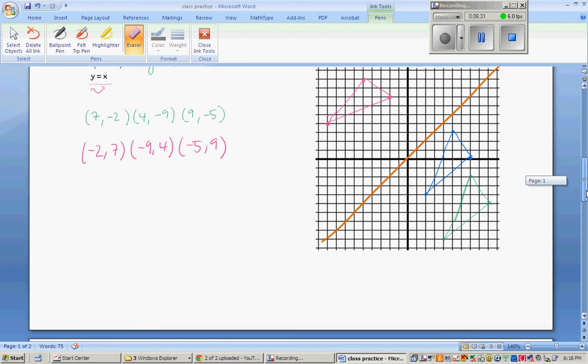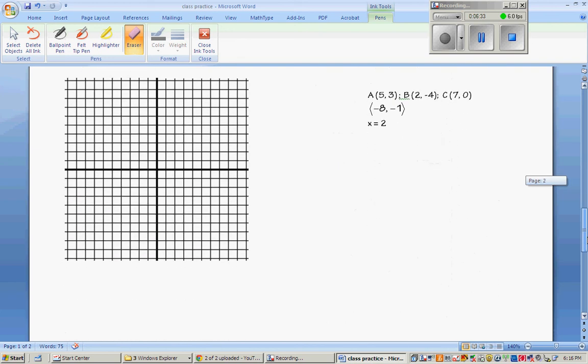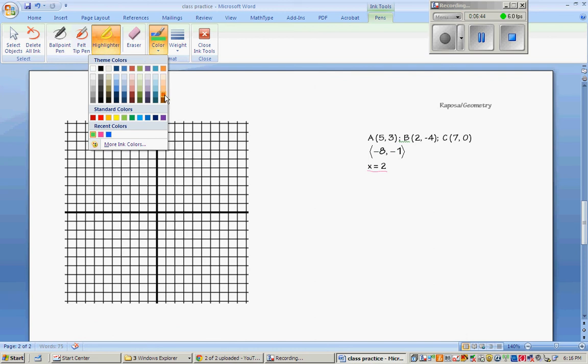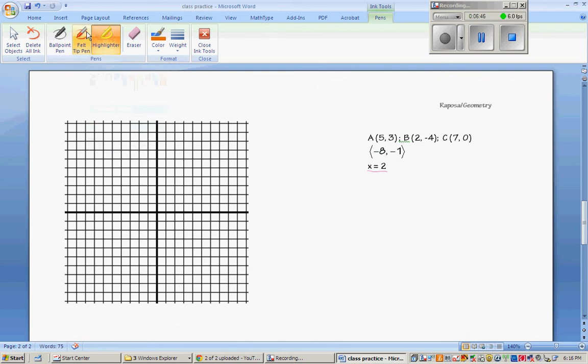You can check out the next one. And the reason that I want to do this one with you is because of this x equals 2 fancy little line. So what we're going to do, I'm going to go get that bright orange. We're going to make sure we know where this line is, this x equals 2.